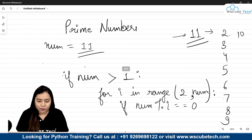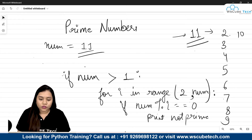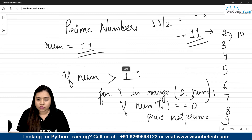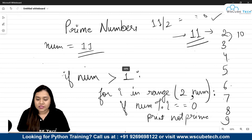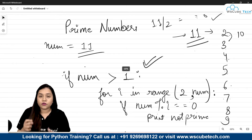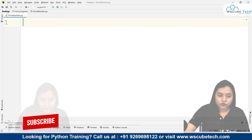If 11 divided by 2 gives remainder 0, it is not a prime number and we print 'not prime'; else it is a prime number. We iterate and check with every number in the range — if 11 divided by any of 2 through 10 does not give remainder 0, then it is a prime number. This is the logic we will use.